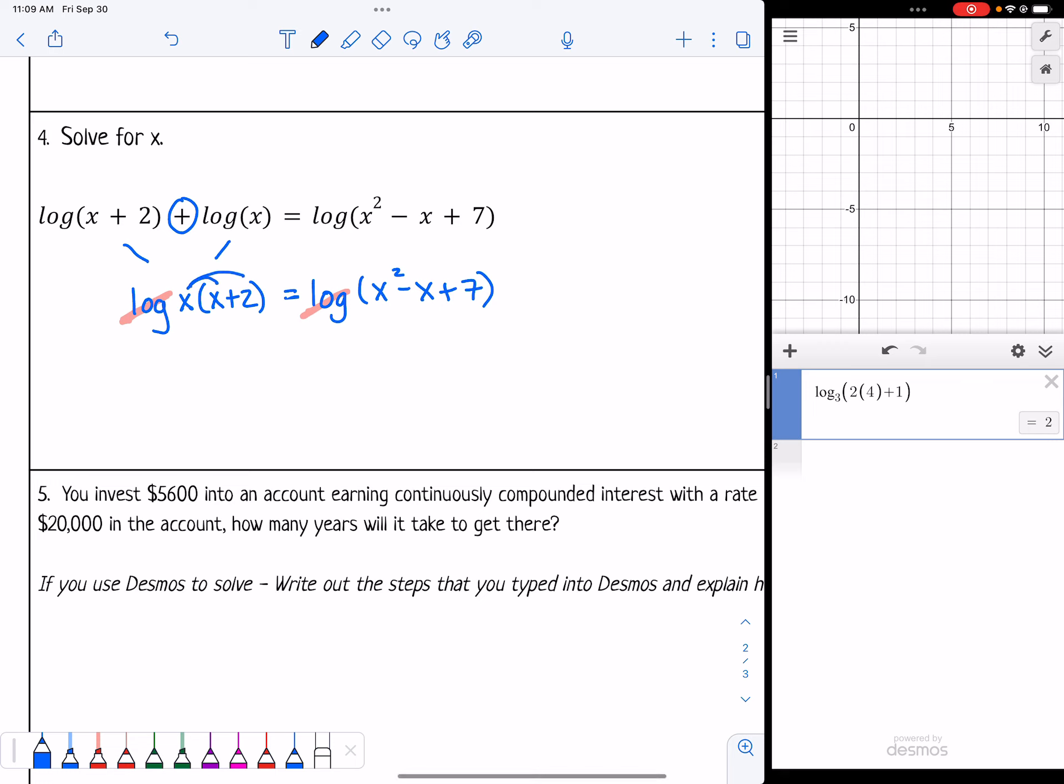I'm going to go ahead and distribute the x. That gives me x squared plus 2x equals x squared minus x plus 7. If I subtract x squared, notice that would cancel out because there's one on each side. Then I'm just left with 2x equals negative x plus 7. I can add x to both sides, and then I get 3x equals 7. Divide by 3, and I'm just going to leave it as 7 thirds because there's no reason to get a decimal. If you wanted to check your answer, you could plug in that.